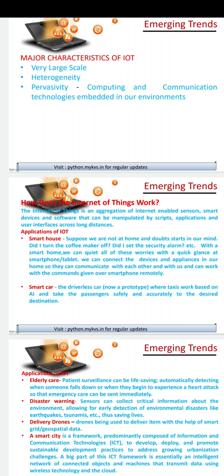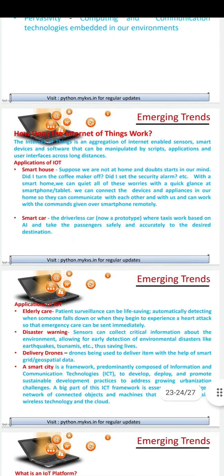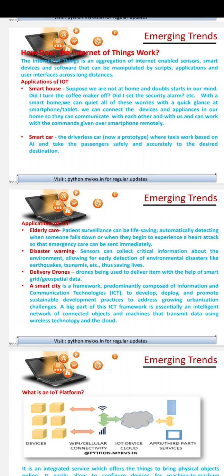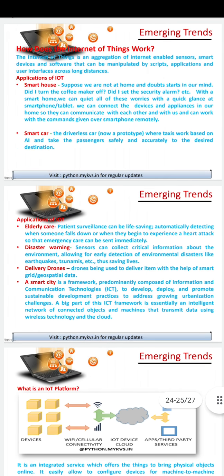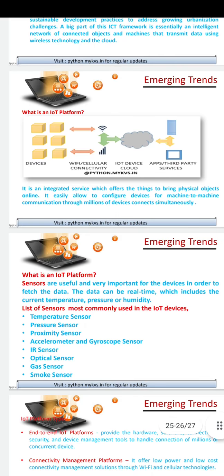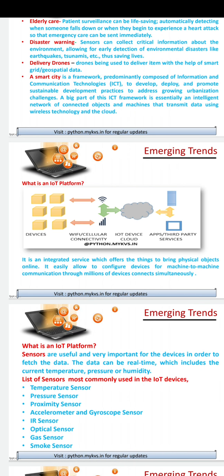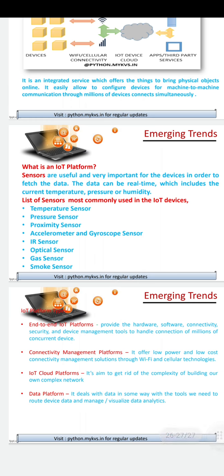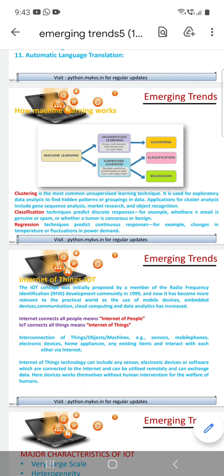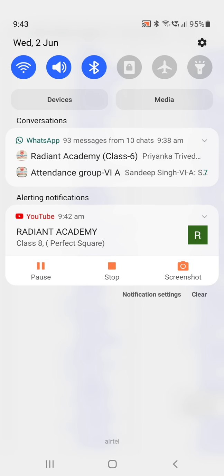Now we have major characteristics of IoT — it is very large scale. How does the Internet of Things work? This complete theory is there and you can read it yourself. This file and PPT is already with you all — please go through it. IoT will be covered in detail in the last topic on social ethics. If anything covered today is not clear, please do let me know. Take care, bye bye.